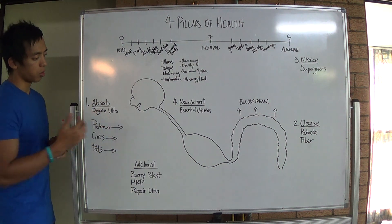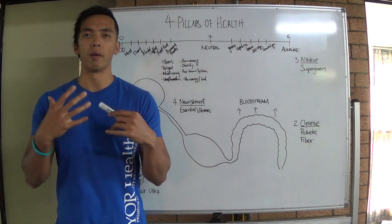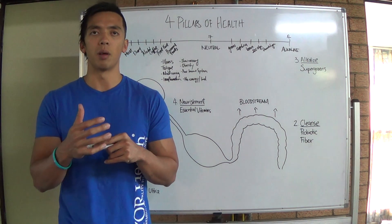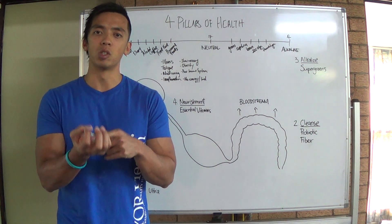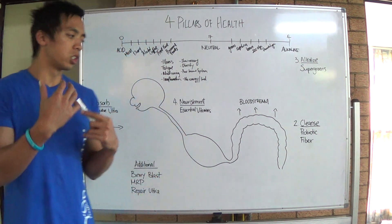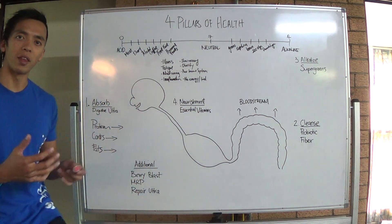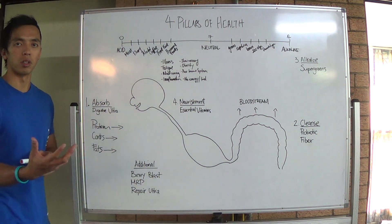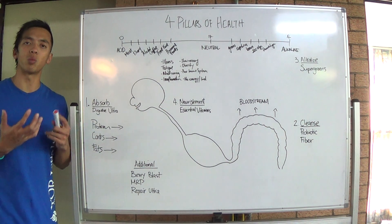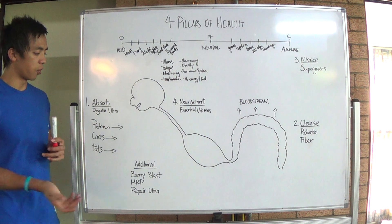The first pillar we talk about is Absorb. In absorb we have the practical digestible approach. Absorb simply means the breaking down of food — we absorb the nutrients from our food. I'll use the example of the three macronutrients: protein, carbohydrates, and fats. These are the three macronutrients we have when we eat our foods.